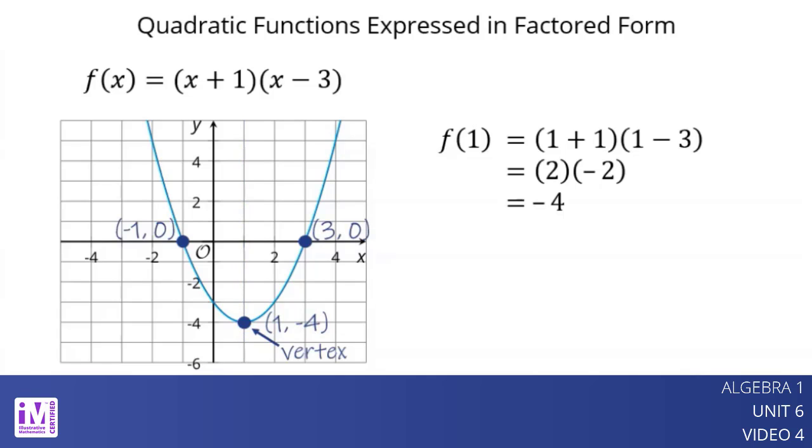Although it is not as easy as with standard form, we can find the y-intercept from factored form. We can see that f of 0 equals negative 3, so the coordinates of the y-intercept are 0, negative 3.